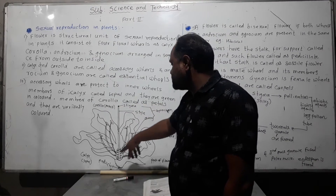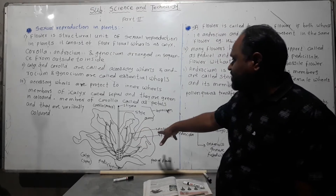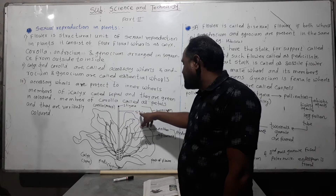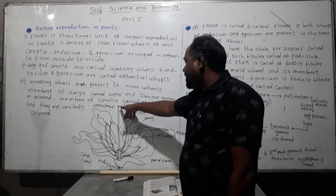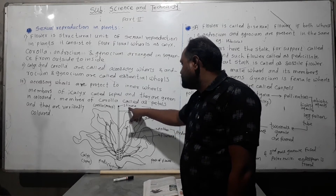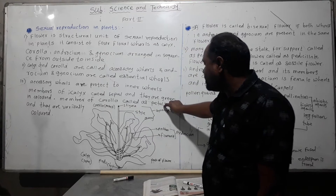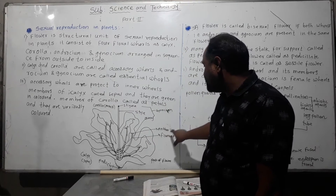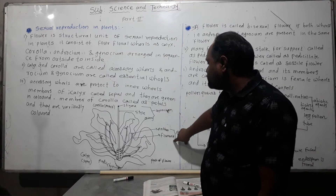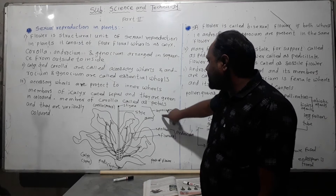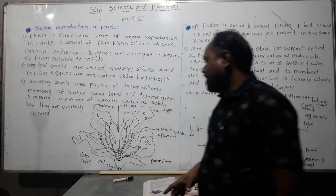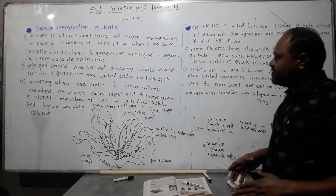Diagrammatically, in the hibiscus flower, the tube-like part is called the style, the top sticky part is called the stigma, and the basal part is the ovary. Stigma, style, and ovary are parts of the gynoecium. Anther and filament are parts of the androecium. Androecium is the male part and gynoecium is the female part.